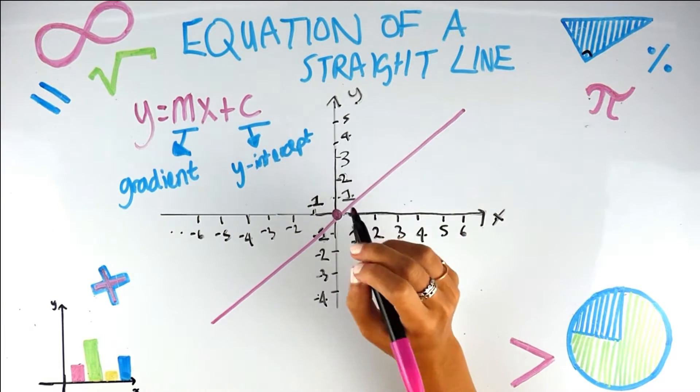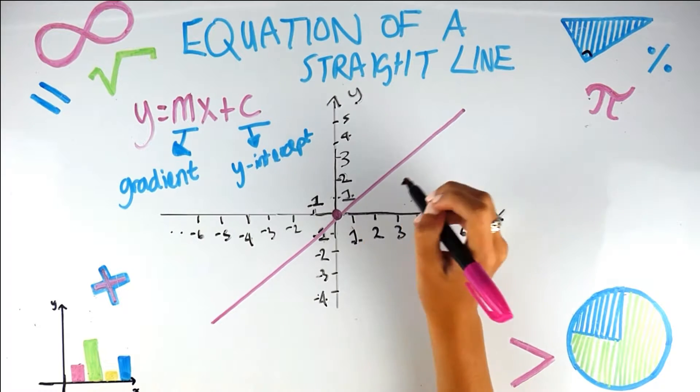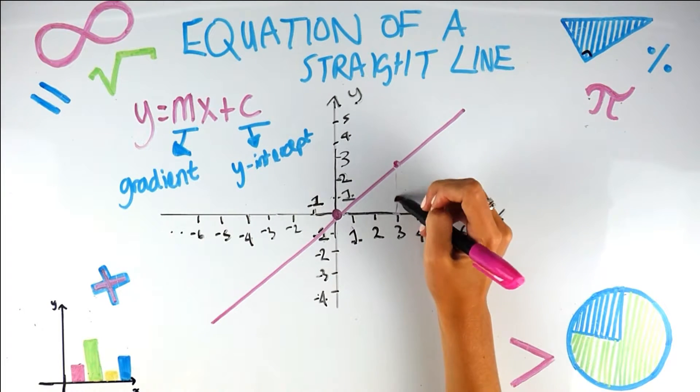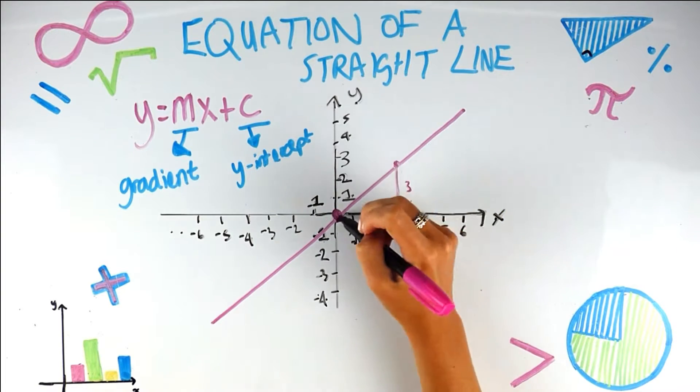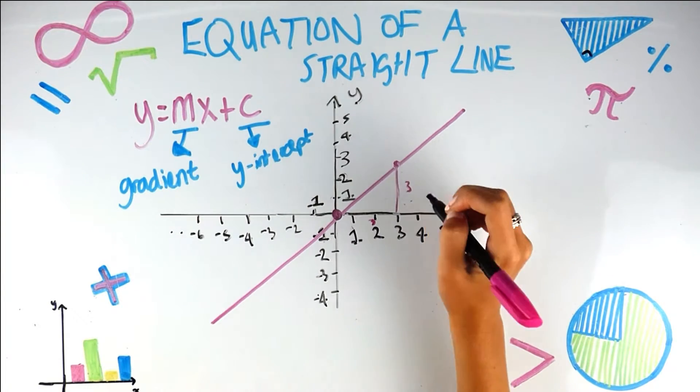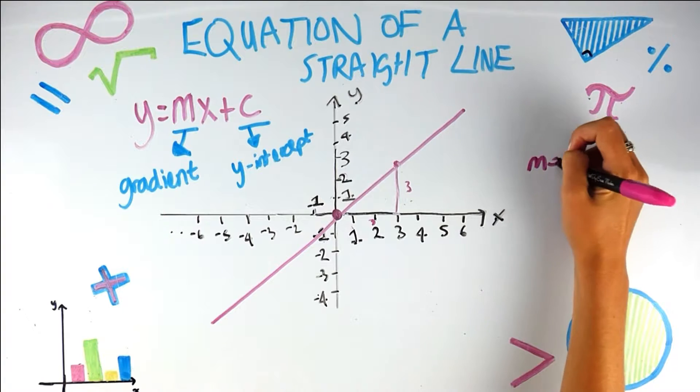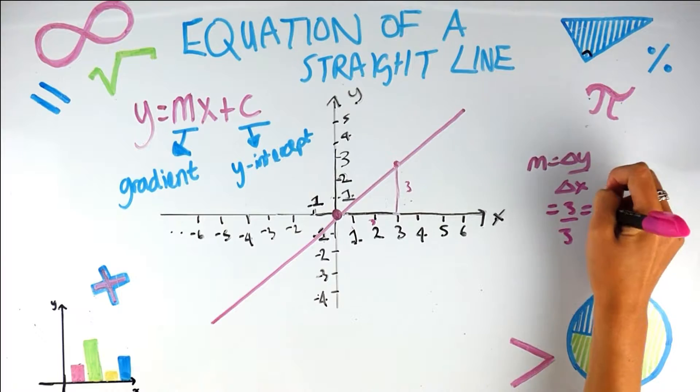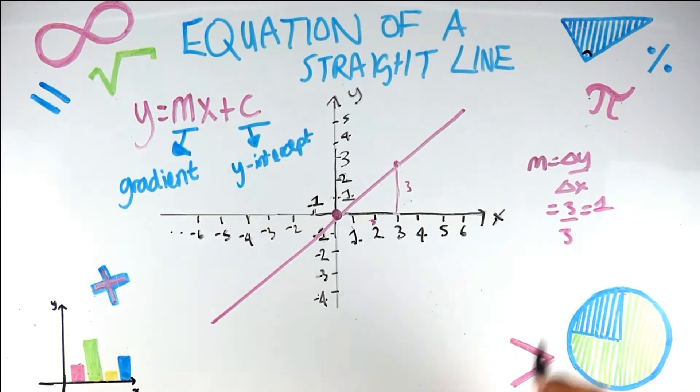What about the gradient? We know I'm going to do the change in y if I pick two points. So let's go here and here. Change in y is 3. Change in x is 3. You can take it from anywhere. So the gradient is change in y over the change in x, which equals 3 over 3, which equals 1. So we know that m equals 1.